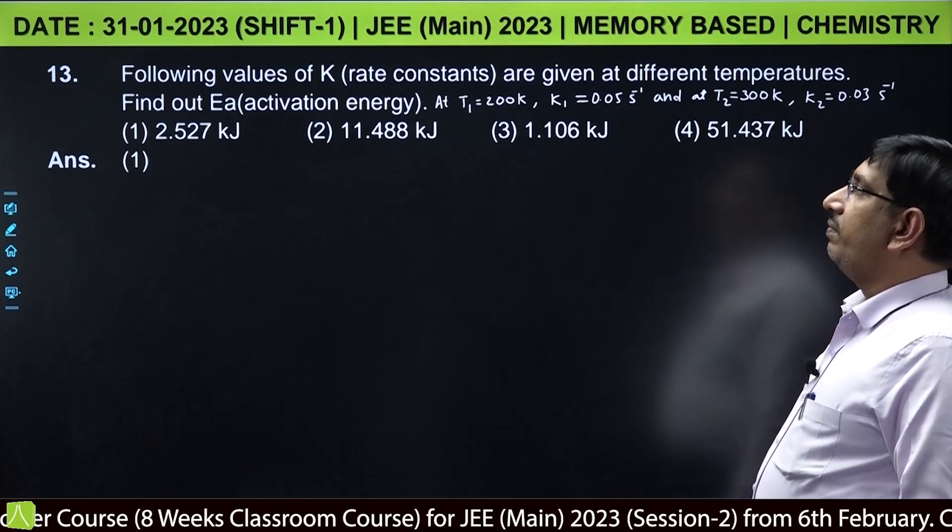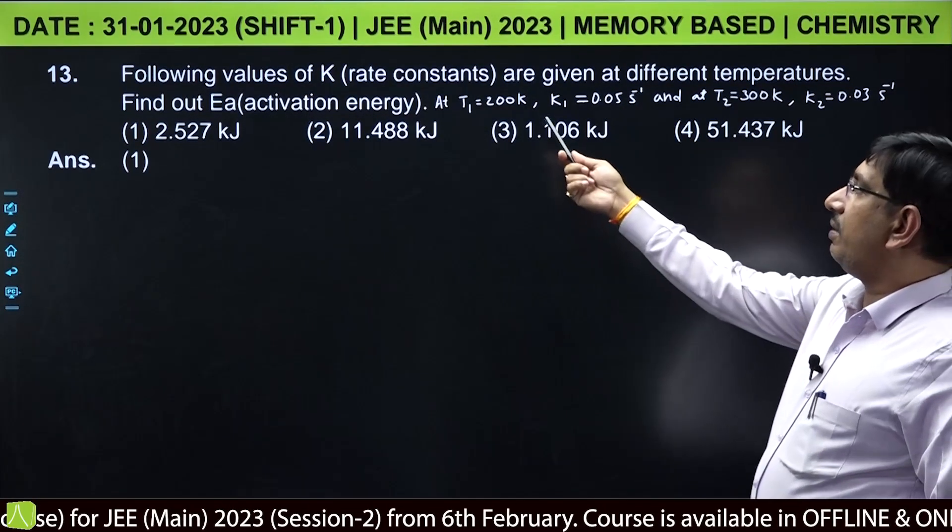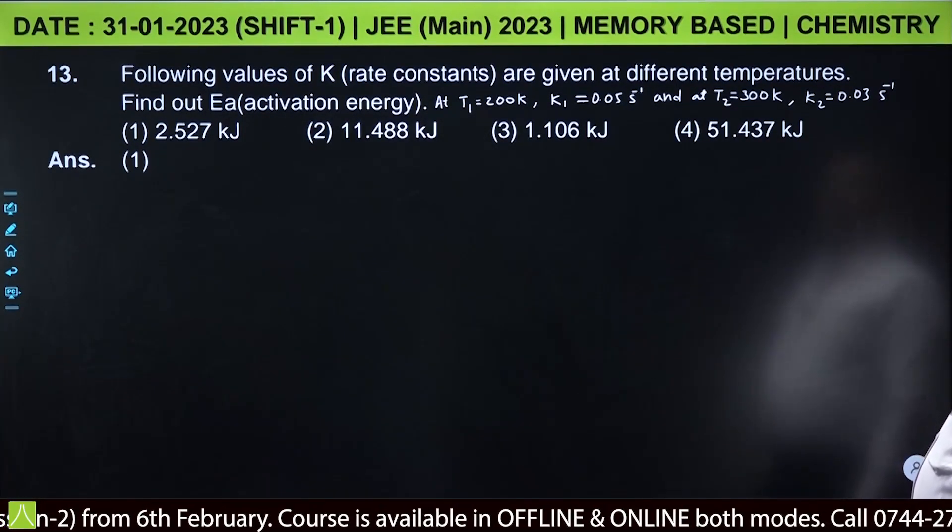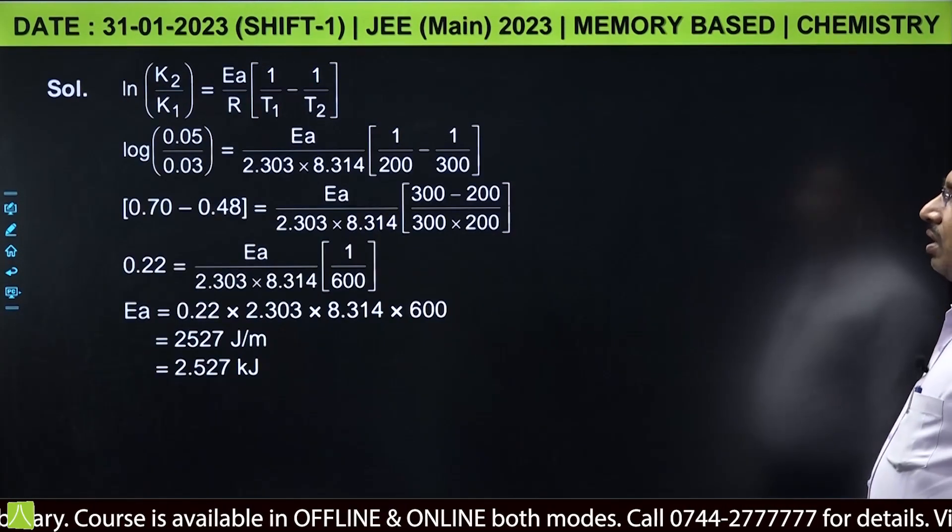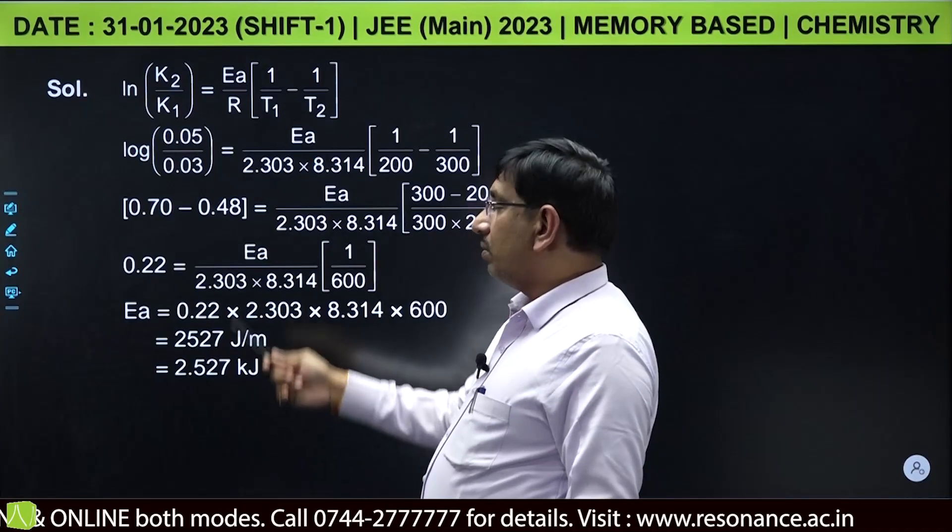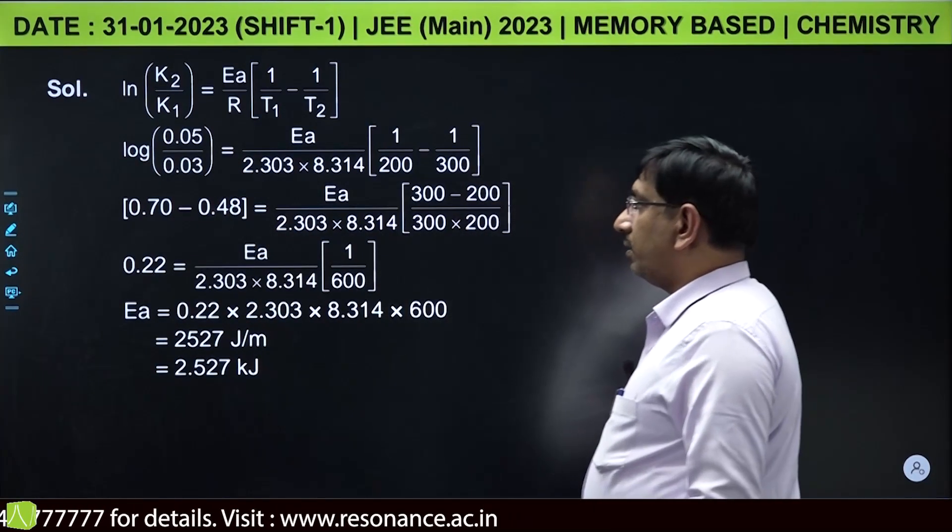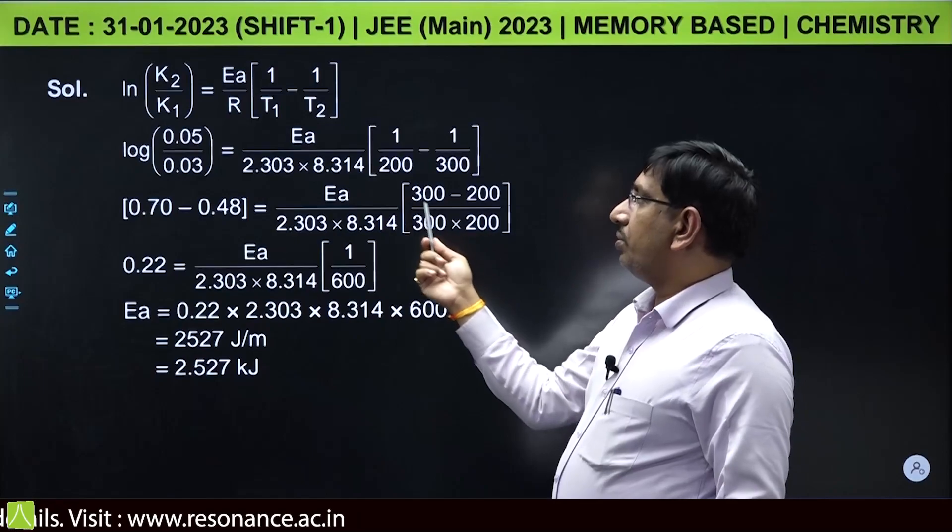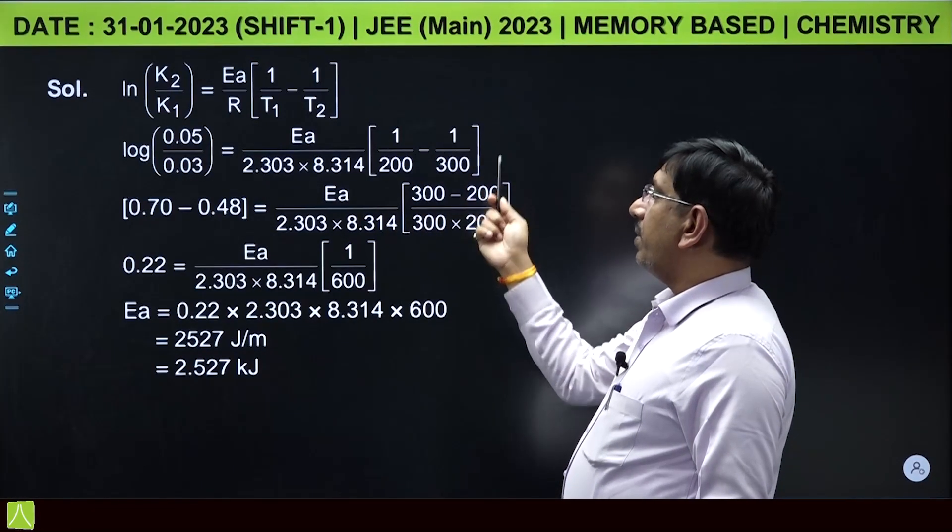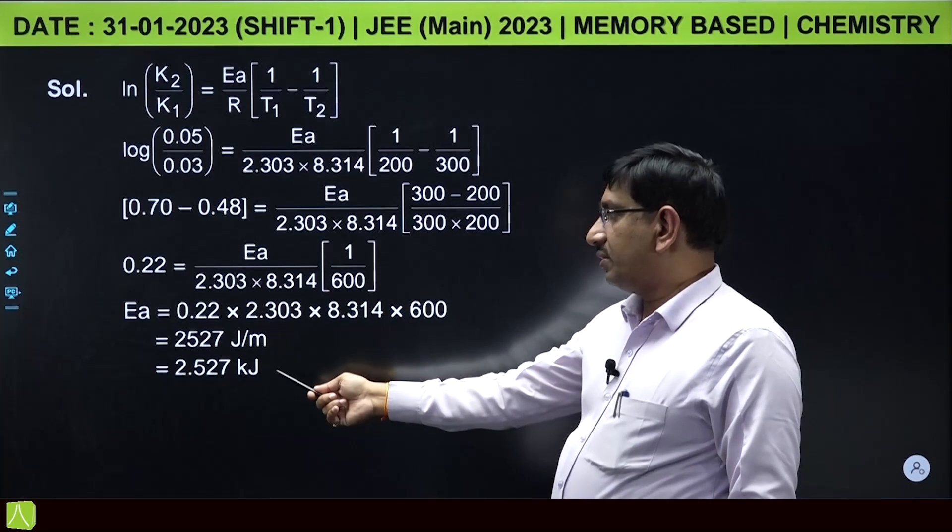Following values of K are given at different temperatures, find out activation energy. Here T1 is 200 Kelvin, K1 is 0.05 second inverse, T2 is 300 Kelvin, K2 is 0.03 second inverse. We know ln K2 by K1 equal to Ea by R into 1 by T1 minus 1 by T2. It is Arrhenius equation. In this, K2 K1 values are given 0.05 by 0.03, and on substitution you are getting Ea by 2.303 into 8.314 into 1 by 200 minus 1 by 300, and on calculation you are getting 2.527 kilojoule.